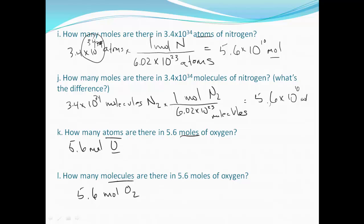Notice: atom of oxygen versus molecule of oxygen. Both simply use one mole equals 6.02 times 10 to the 23rd — but this one gives atoms and the other gives molecules. We've ripped through these pretty quickly because we've done these problems in class and this is just for review.